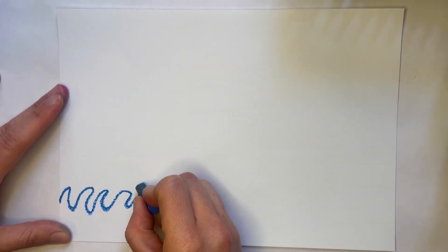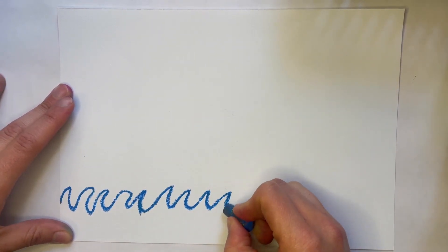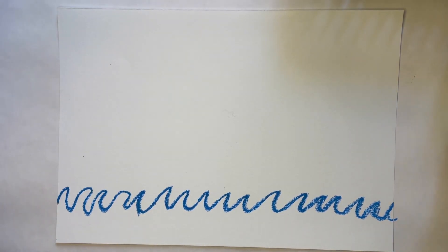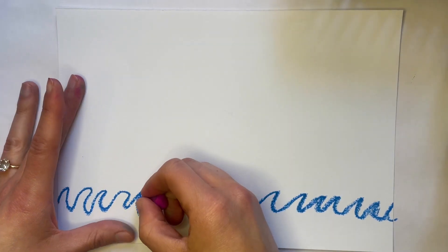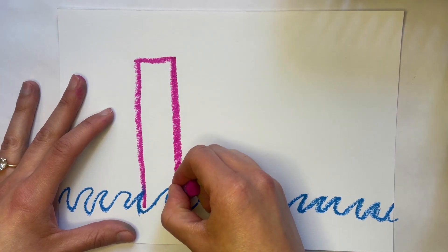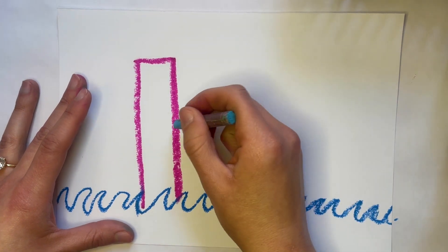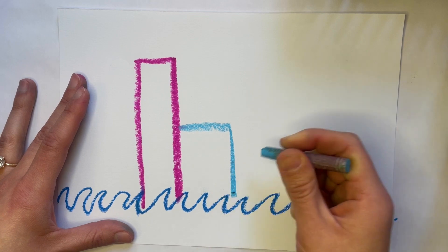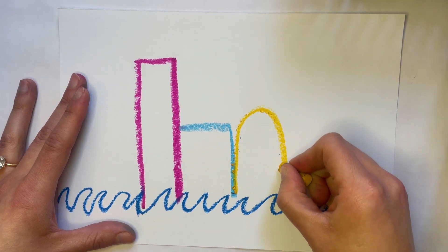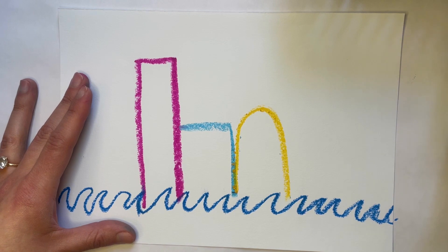My castle is going to be in the middle of the ocean. Here's some waves over here. It's not under the ocean — it's on top of the ocean, so it kind of floats on top. I'm going to draw my castle over here. I'm going to draw a big tower, which is going to be a rectangle shape. Maybe next to that I'll draw a little square, and then over here kind of an arch shape. So I'm drawing a lot of different shapes, huh?